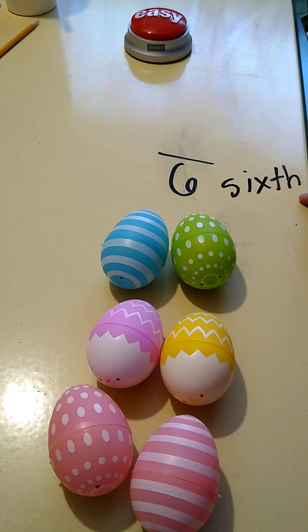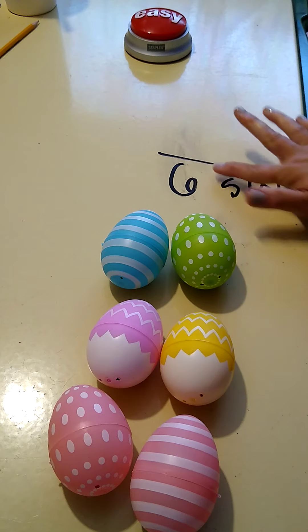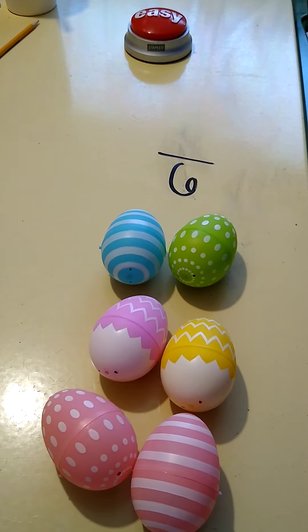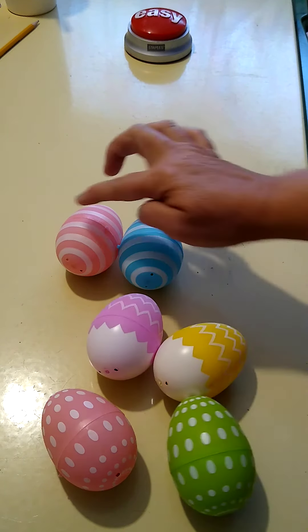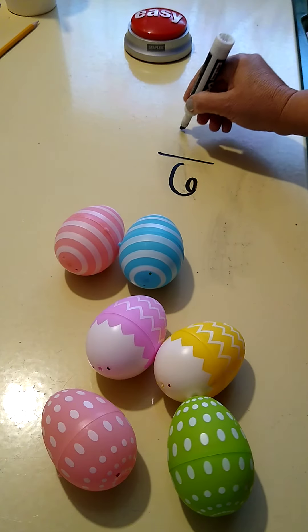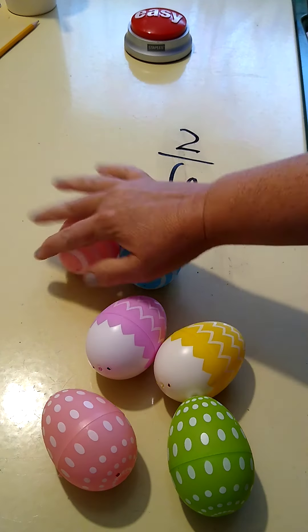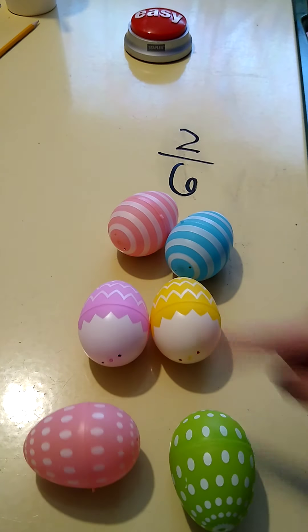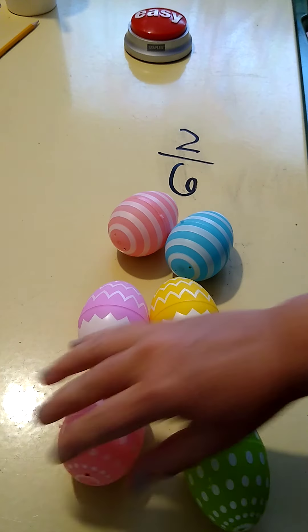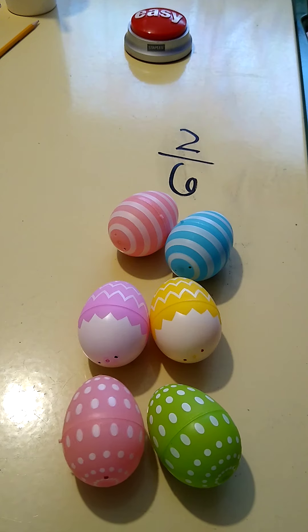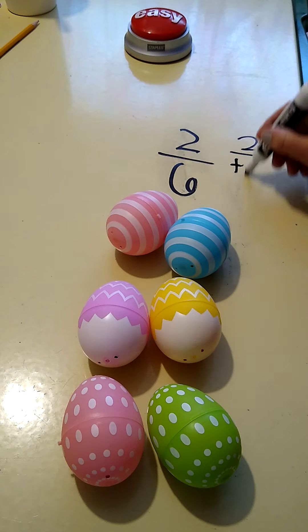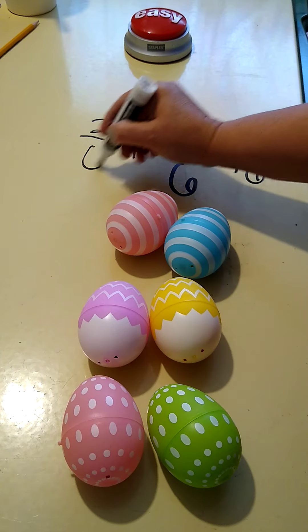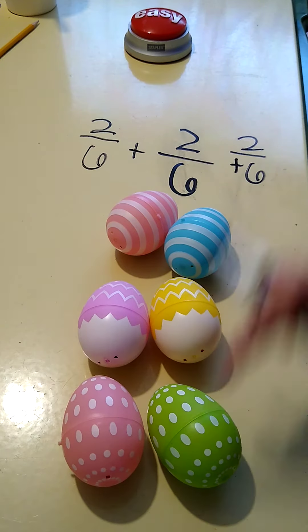Let's see how many sixths are striped. Two-sixths of these eggs are striped. Two-sixths of these eggs have this zigzag pattern, and two-sixths of these eggs have polka dots. If I added that together, two-sixths plus two-sixths plus two-sixths equals six-sixths, or one whole group of eggs.